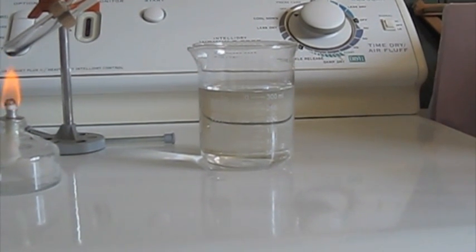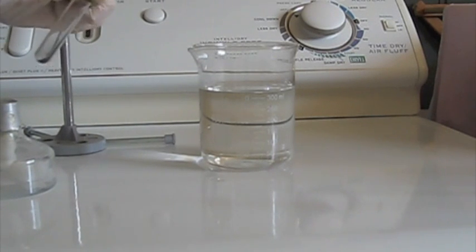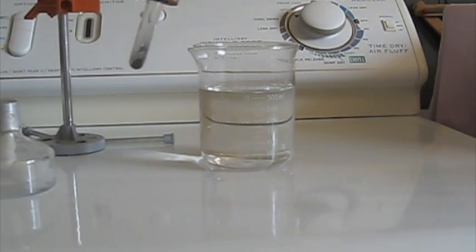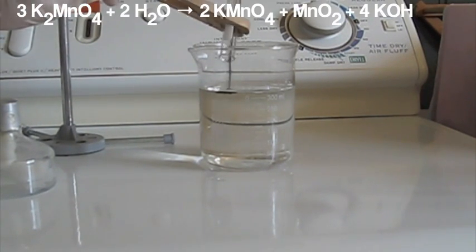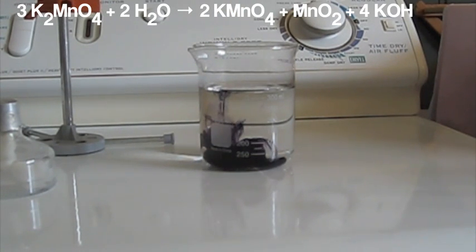Here's a beaker of water. You'll see the distinct green color of potassium manganate. It only lasts a few seconds because it turns back to potassium permanganate. Do you see it? It's green. But a few seconds later, it becomes purple and turns back to potassium permanganate.